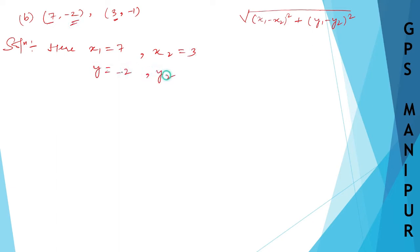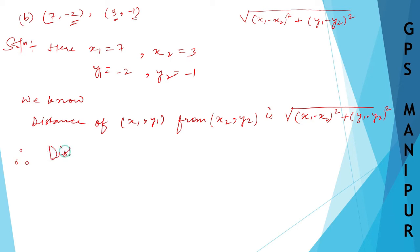We know that distance of (x1, y1) from (x2, y2) is square root of (x1 minus x2) whole square plus (y1 minus y2) whole square. So therefore, distance of (7, -2) from (3, -1) is root over...